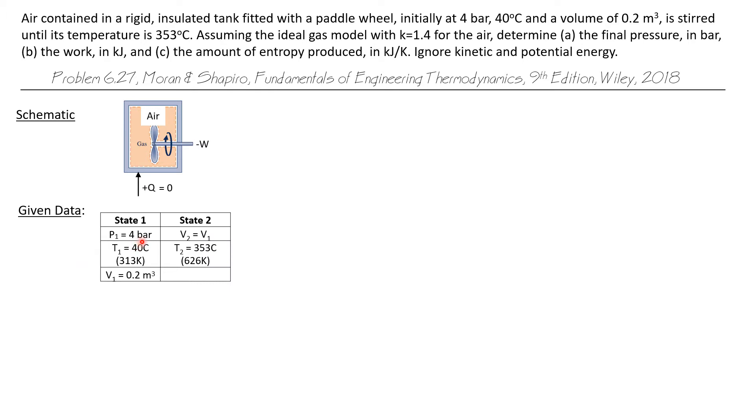We're given some properties for both states. We know the initial pressure is 4 bar. The initial temperature is 40 degrees C, which is 313 degrees Kelvin. And the volume is 0.2 cubic meters, which does not change. So state 2 has the same volume as state 1. And the final temperature is 353 degrees C, which is 626 Kelvin.